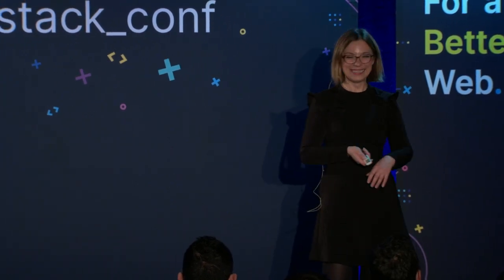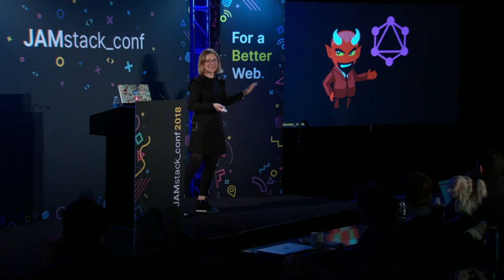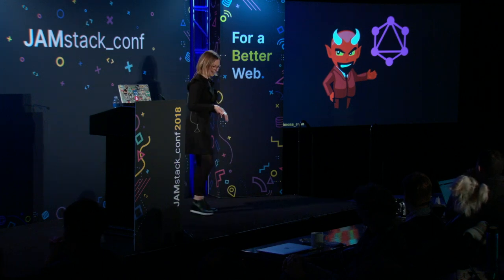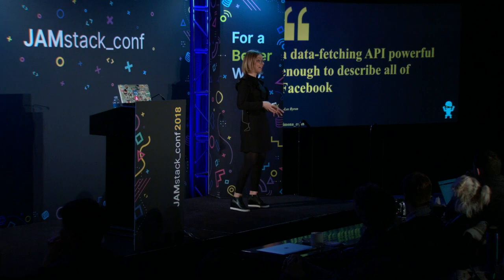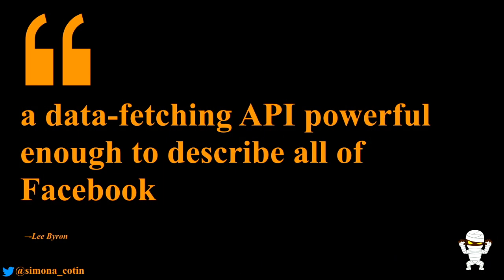So, GraphQL. It came to be at Facebook around 2012 when they started rewriting their mobile applications. What they really wanted to do was define a data-fetching API powerful enough to describe all of Facebook — and I'll let that sink in. Facebook is huge. It seems that GraphQL was the solution for that.